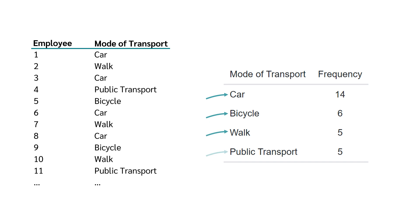To do this, we simply enter the four possible options car, bicycle, walk, and public transport in the first column and then count how often they occurred.